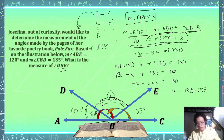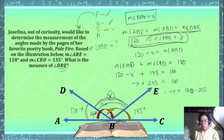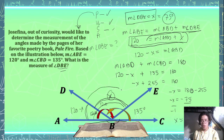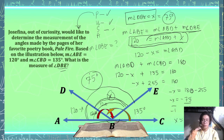So negative X equals negative 75. Dividing both sides by negative 1, X equals 75. Since X equals the measurement of angle DBE, therefore the measurement of angle DBE — the angle on the book — is equal to 75 degrees. And we've solved our problem.